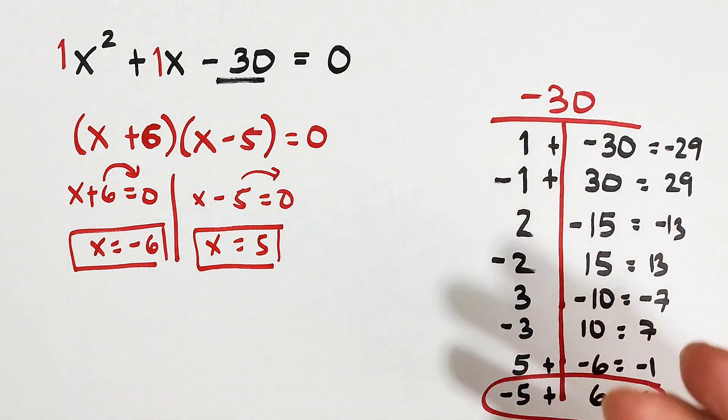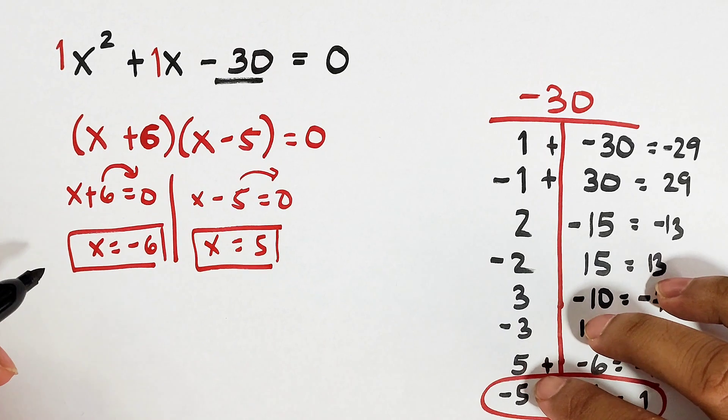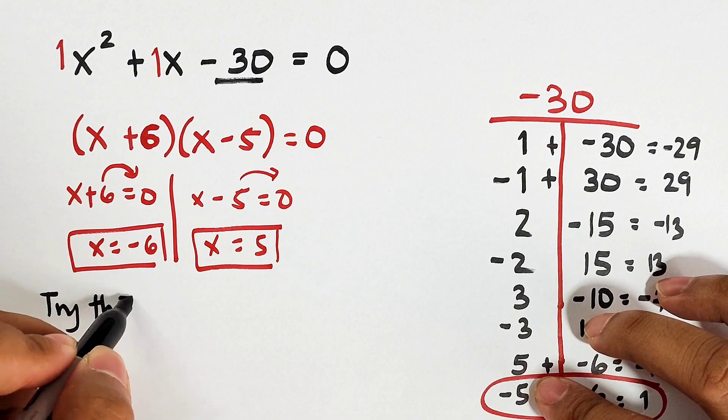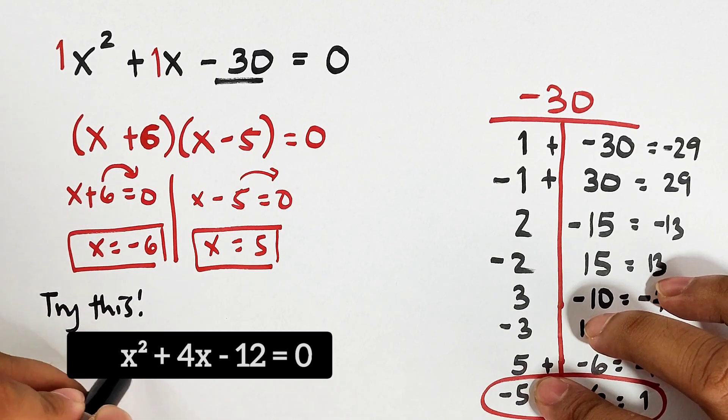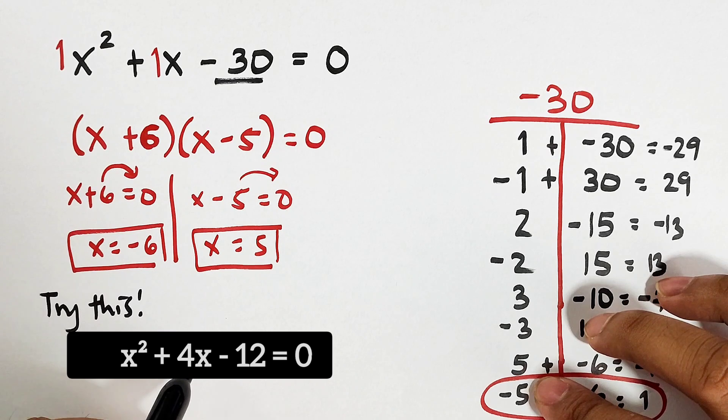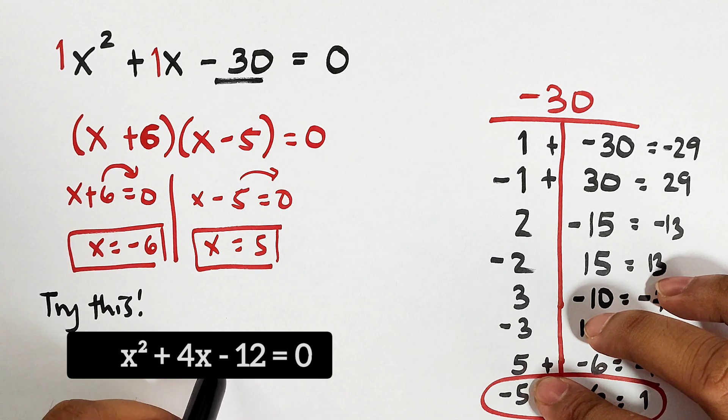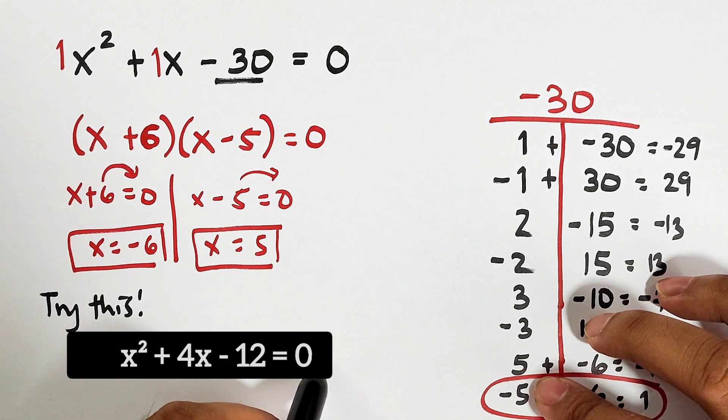So now guys, as part of our routine, I want you to try this one and put down on our comment section what is your answer in this problem. Try this one. Let's have x squared plus 4x plus 12 is equal to 0.